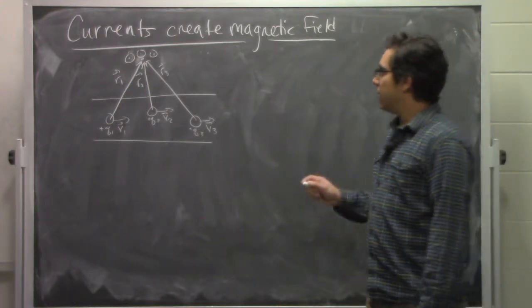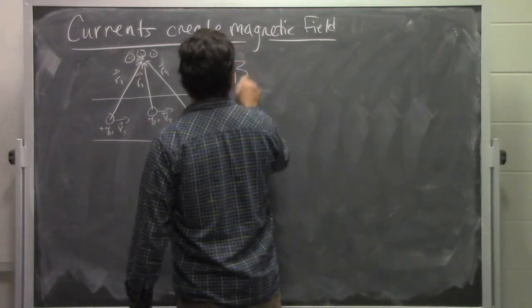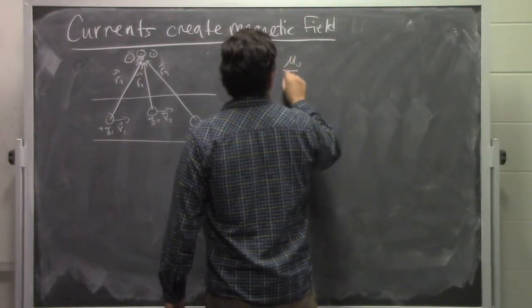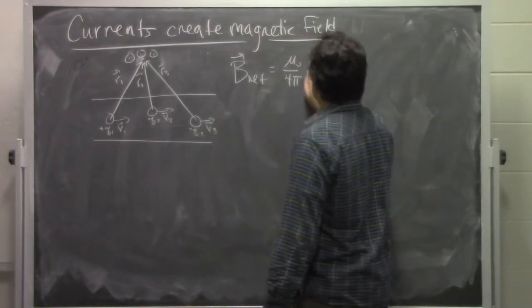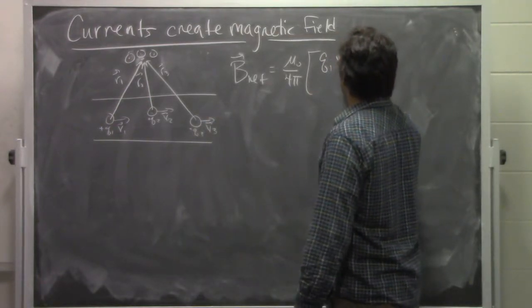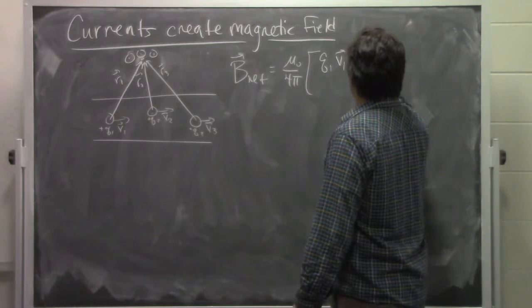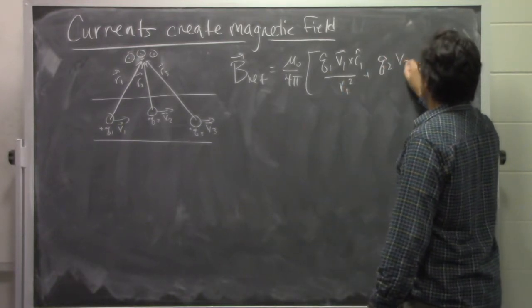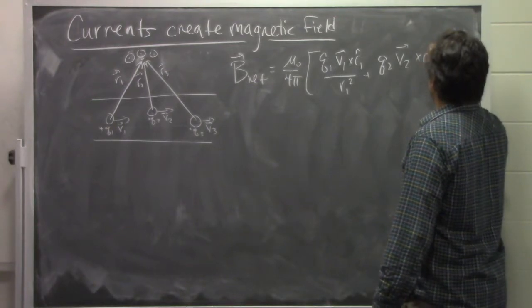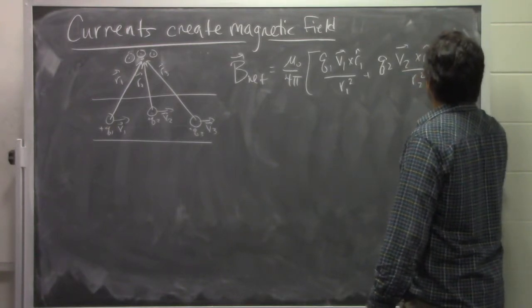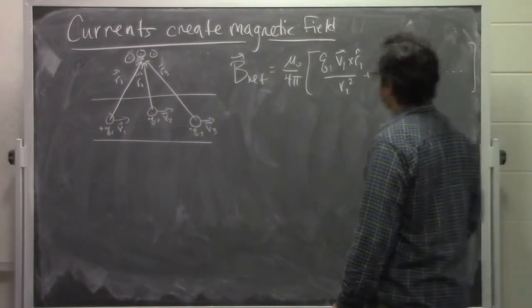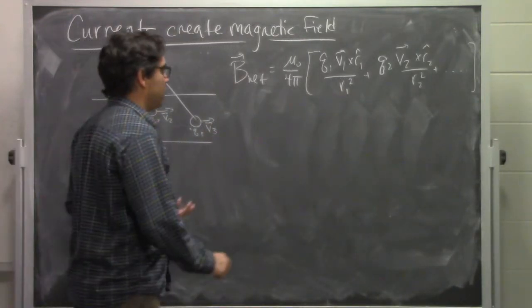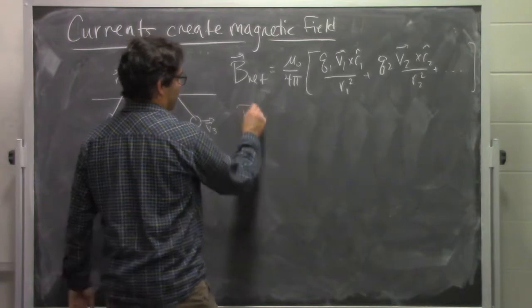If we look at the total magnetic field that's produced at any point in time, that is going to be equal to mu naught over 4 pi times the quantity Q1 V1 cross R1 hat over R1 squared plus Q2 V2 times R2 hat over R2 squared plus all the other terms. This is what the superposition principle tells us.